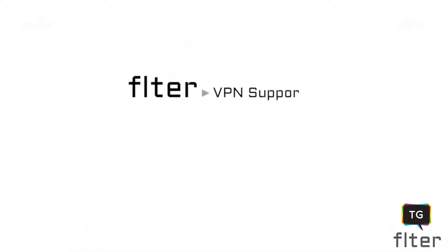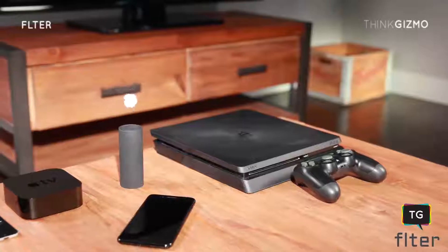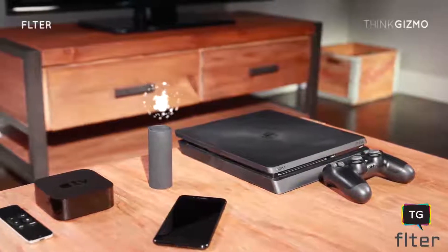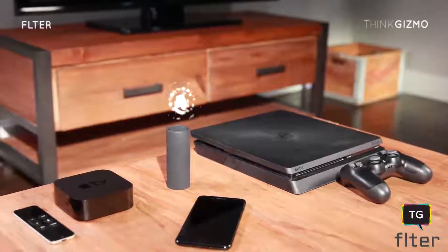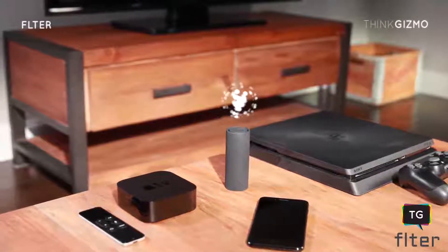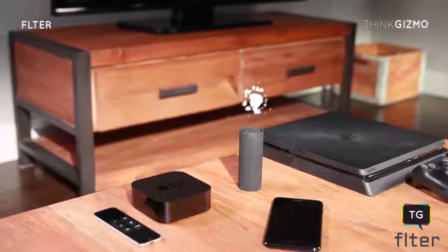We created Filter in order to make privacy and security more accessible and easier to use. Filter provides VPN support, ad-blocking capability, and Tor anonymity on all the devices in your home. This is especially important for devices that don't normally support these applications, like gaming consoles, smart TVs, and media players.